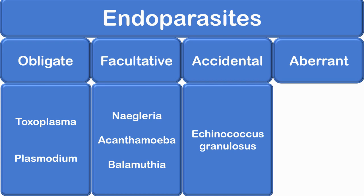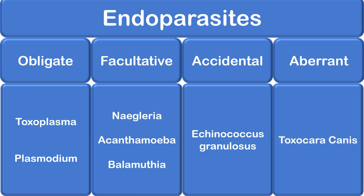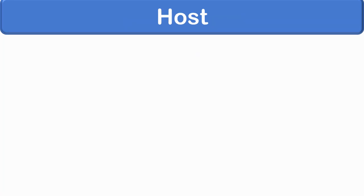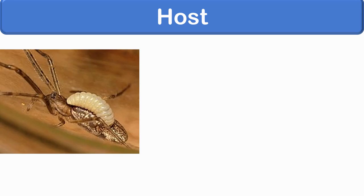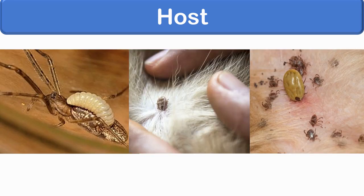Aberrant parasites are ones which infect a host in whom they cannot develop further; they are called aberrant or wandering parasites — for example, Toxocara canis, the dog roundworm, infecting humans. A host is defined as an organism which harbors the parasite and provides nourishment and shelter, and is relatively larger than the parasite.